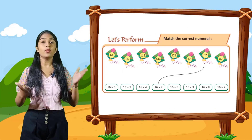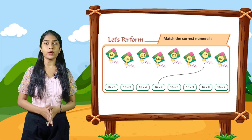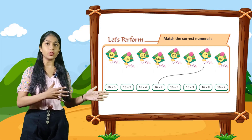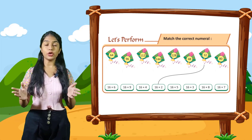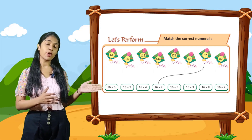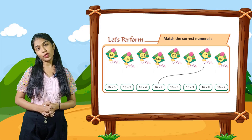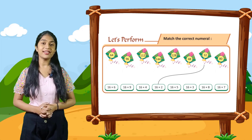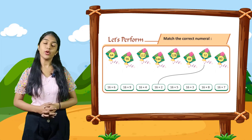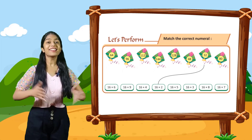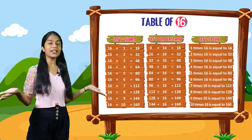So now let's perform. Here you have to match the correct number and one is done for you: 32. 16 into 2 is equal to 32, so 16 into 2 is the right answer. Rest you have to do yourself.